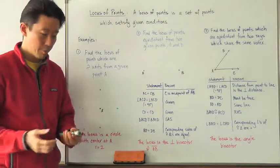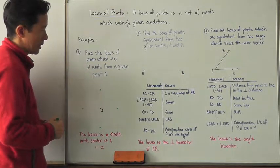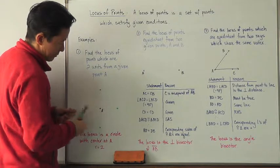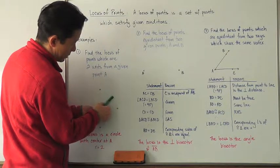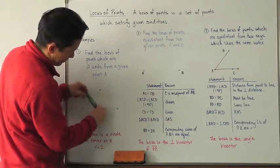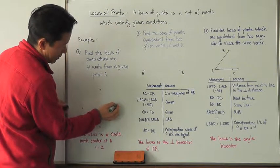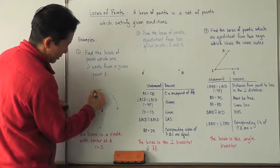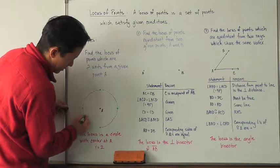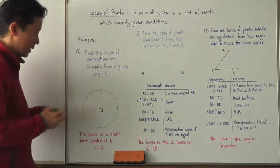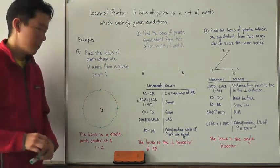Now, of course, there are many more points that we can actually find that would satisfy this particular given condition. For example, if I was to measure it, then I would go from here and it would come around this way — all those points would be two units away. In the same respect, if I was to go this way, those points also would all be two units away. And so basically what I end up coming up with is something that looks very familiar to all of us, because we've all used a compass, and it's going to look like that. All of those points are going to be exactly two units away from point A.